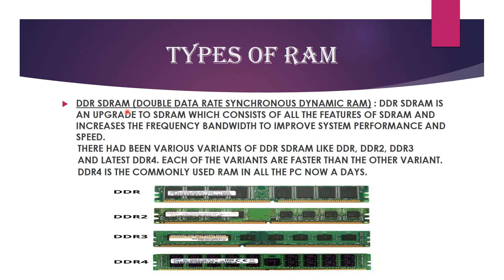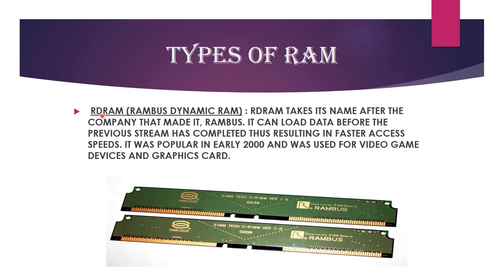DDR SDRAM, or Double Data Rate Synchronous Dynamic RAM, is an upgrade to SDRAM. It includes all features of SDRAM and increases the frequency bandwidth to improve system performance and speed. There have been various variants: DDR, DDR2, DDR3, and the latest DDR4, each faster than the previous. DDR4 is the most commonly used RAM in PCs today. We can see pictures of DDR RAM here. Next is RDRAM, or Rambus Dynamic RAM, named after the company Rambus. It can load data before the previous stream has completed, resulting in faster access speed. It was popular in the early 2000s and was used for video game devices and graphics cards.